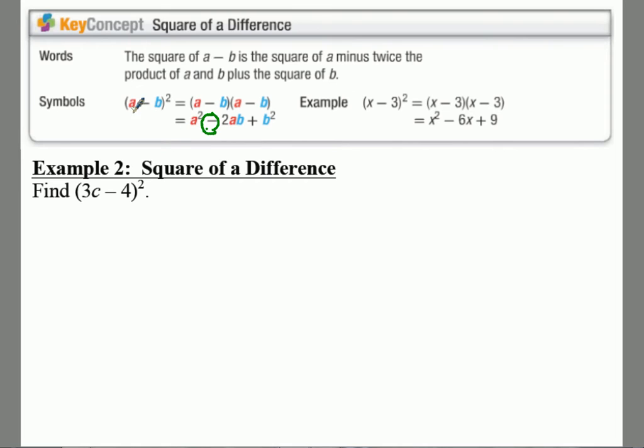So we can still use the same shortcut where we take our first term and square it. And then in the middle we take 2 times negative b, which is negative 2b. Negative 2b times a, which gives you negative 2ab.